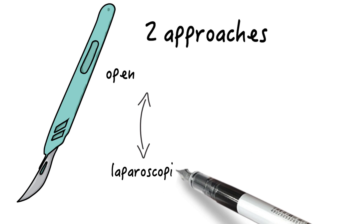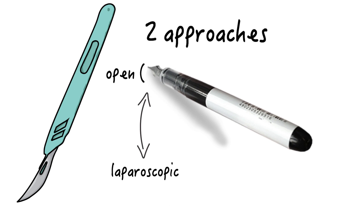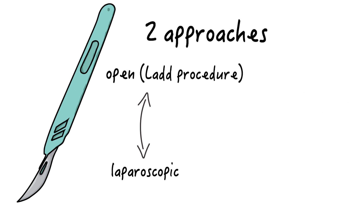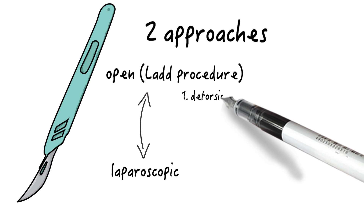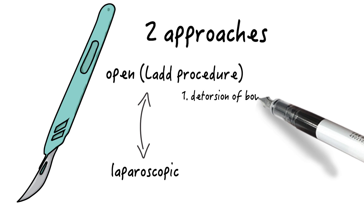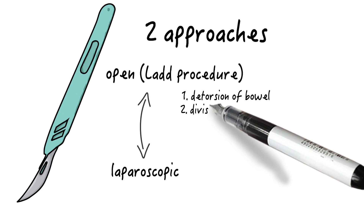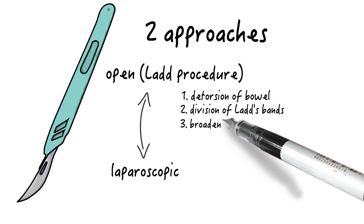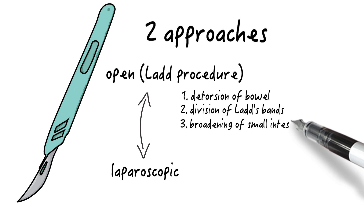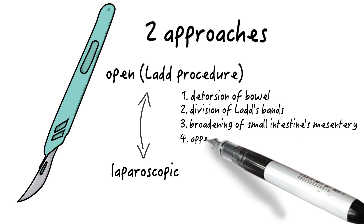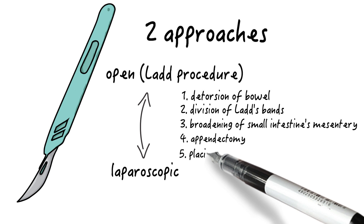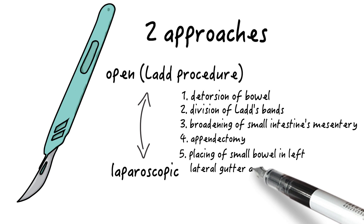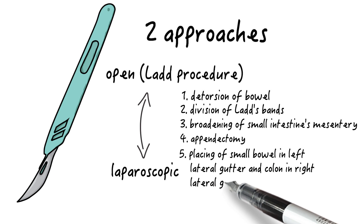The first approach is open, and was initially described by Dr. William Edwards Ladd. The steps involve detorsion of bowel in acute cases, division of Ladd's bands, which is lysis of adhesions, broadening of the small intestine's mesentery, performing an appendectomy, and then placing the small bowel along the right lateral gutter and colon along the left lateral gutter.